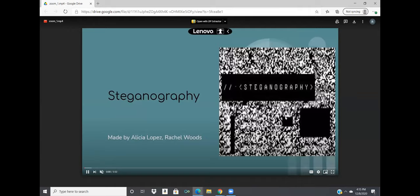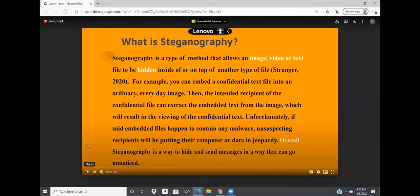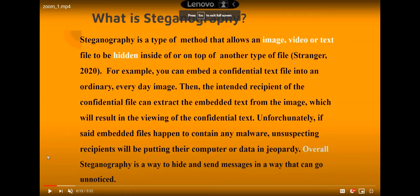They present their project on steganography — a method that allows an image, video, or text file to be hidden inside of or on top of another type of file. For example, you can embed a confidential text file into an ordinary everyday image. The intended recipient can extract that embedded text, revealing the confidential file. Unfortunately, if those files contain malware, unsuspecting recipients may put their computer or data in jeopardy. Overall, steganography is a way to hide and send messages in a way that can go unnoticed.